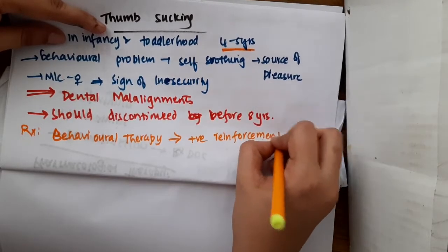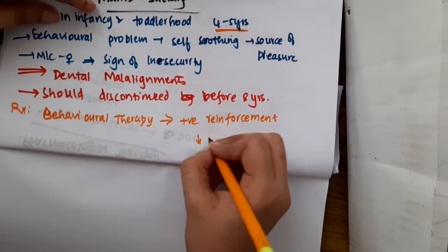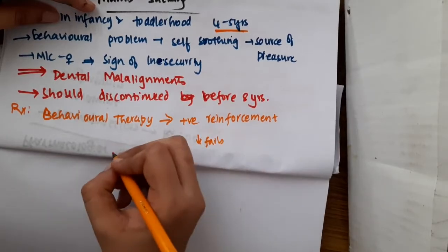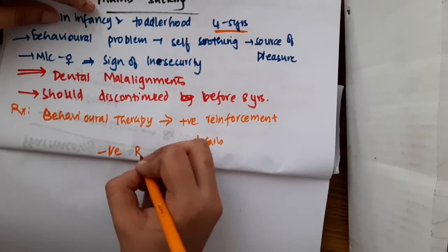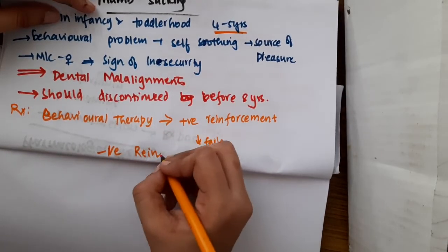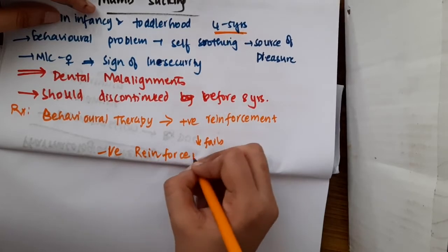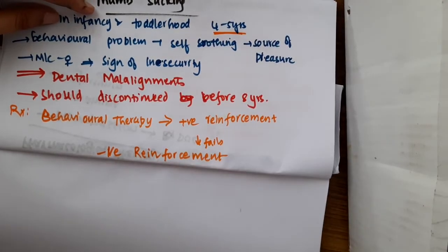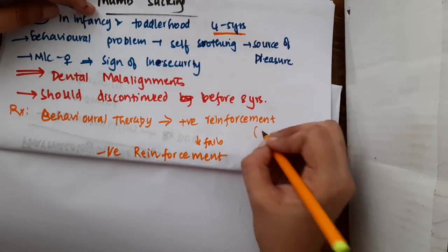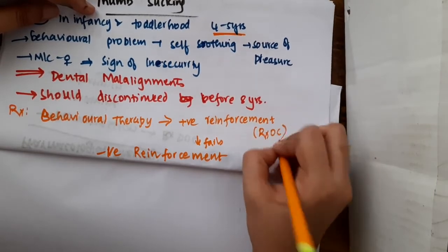If this fails, negative reinforcement can be given. That is, when she tries to suck the thumb, we can give punishment to her. However, positive reinforcement is actually the treatment of choice.